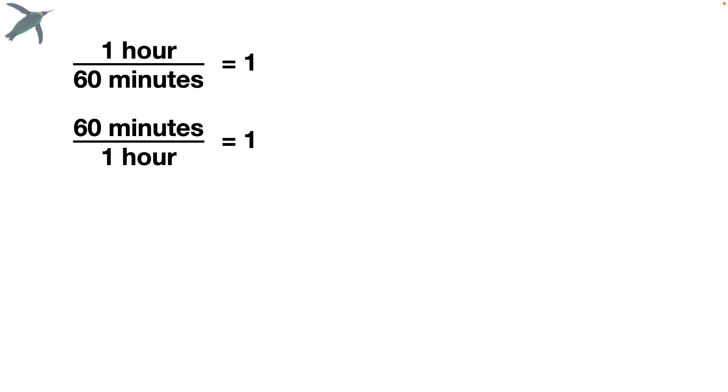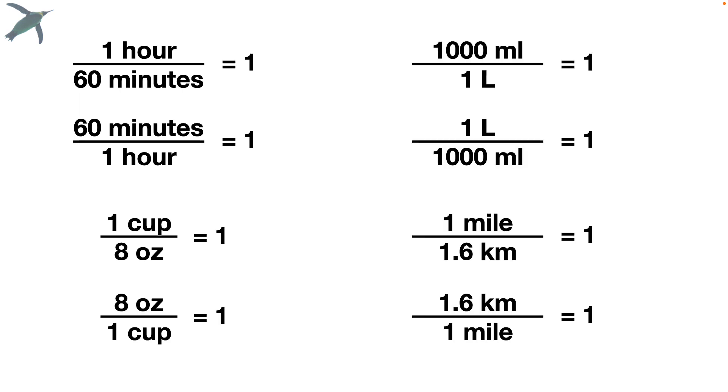You can also flip it. 60 minutes over an hour. That equals one. One cup is equivalent to eight ounces. So that's one. You can flip it. It's still one. So we've got milliliters to liters. We've got miles to kilometers. You get the idea. All of these things are equal to one.